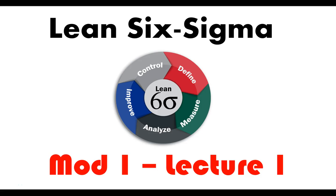Hi, this is Professor Cummings, and this is the first of our series on Lean Six Sigma. You're in Module 1, Lecture 1 of that first module. In Lecture 1, we're going to be going over Lean and the background of Lean. Then we'll go over Six Sigma in Lecture 2, and in the third module we'll go over how they work together being implemented into Lean Six Sigma.